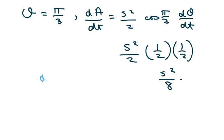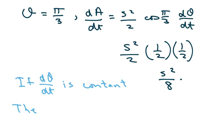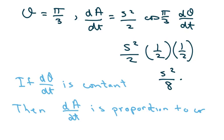To explain the second part: even if the derivative of theta with respect to time is constant, the derivative of the area with respect to time is proportional to cosine of theta, because that's what we were using in our derivative formula. So dA/dt changes as theta changes, making it non-constant. That's all, thank you.